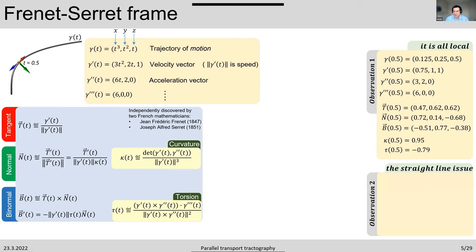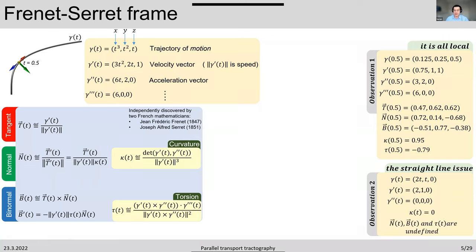The issue arises when curvature is zero, which is the case for straight lines. For a straight line like 2t, t, 0, the second derivative vanishes, making curvature zero, so the normal has a zero in the denominator. Without a normal, you have no binormal and no torsion — these are undefined. The Frenet-Serret frame is undefined when curvature is zero and cannot be used.